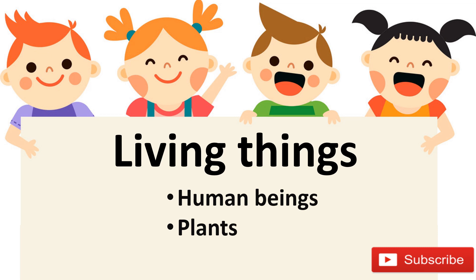Plants bhi khana khaate hain, saans bhi lete hain, bade bhi hote hain, aur in the end wo mar bhi jaate hain. For example, jab ek plant ko proper sunlight milti hoti hai, toh wo grow karta hai aur ek bade se tree mein transform ho jata hai. Toh in charon wajuhat ki wajah se plants bhi living things kehlate hain.